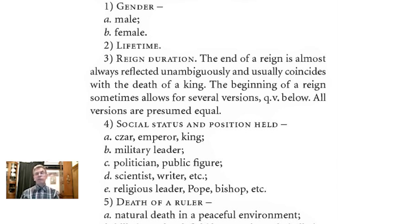In previous discussions, we briefly mentioned the methods of dynastic parallelism and frequency damping. There is another method called the method of form codes, which allows us to compare biographies of medieval and ancient figures and also identify duplicates. It complements the previous methods and, as it turns out, works well with them. Let me briefly explain what we're talking about, what kind of form codes were introduced, and how they are used.